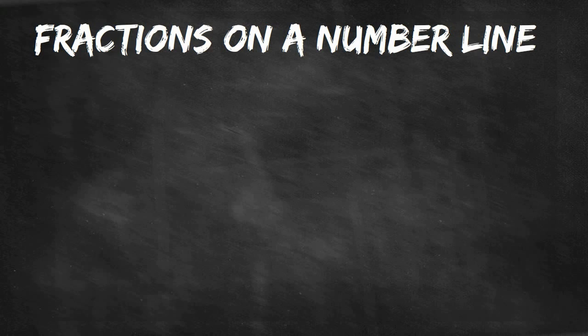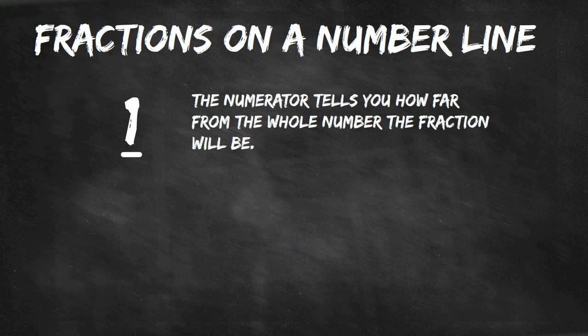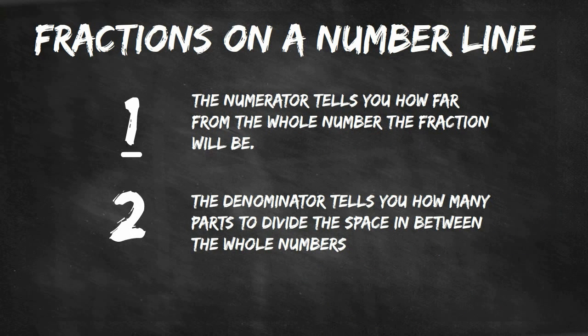Before we get started, let's review some rules for fractions on a number line. The numerator tells you how far from the whole number the fraction will be. The denominator tells you how many parts to divide the space in between the whole numbers.